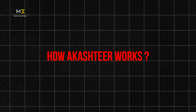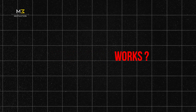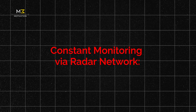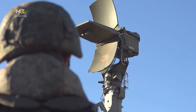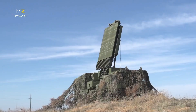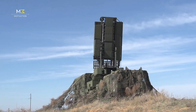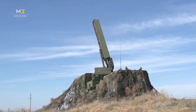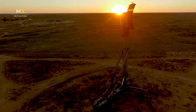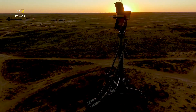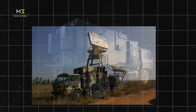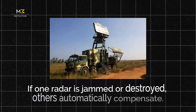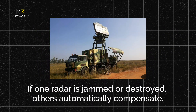How Akash TIR works — Constant monitoring via radar network: A web of military and civilian radars scans the skies 24/7, streaming data in real time to Akash TIR command centers. If one radar is jammed or destroyed, others automatically compensate.